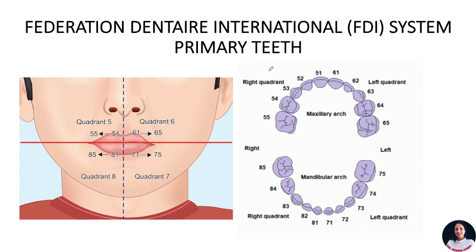In the FDI system for primary teeth, as you know, we use two digits where the first digit denotes the quadrant and the second digit denotes the tooth number. For primary teeth, we use quadrant numbers 5, 6, 7, and 8 instead of 1, 2, 3, and 4 used for permanent dentition. The second digit goes from 1 to 5, following the same pattern as in permanent dentition.